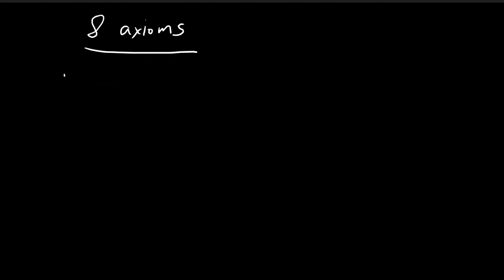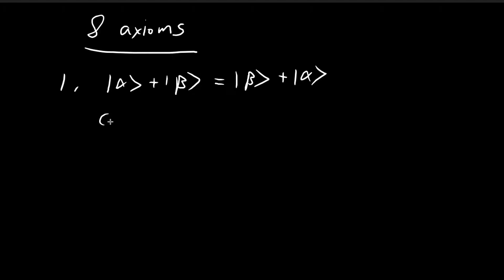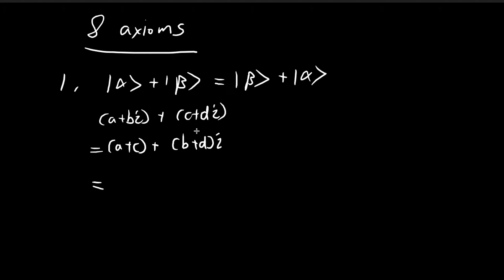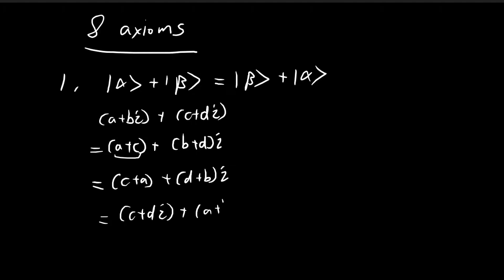The first axiom is that vector addition must be commutative, meaning alpha + beta = beta + alpha. For complex numbers: (a+bi) + (c+di) = (a+c) + (b+d)i. By basic arithmetic we can switch the order, and by the definition of vector addition this equals (c+di) + (a+bi) = beta + alpha. So for complex numbers this first axiom is satisfied — vectors are indeed commutative.